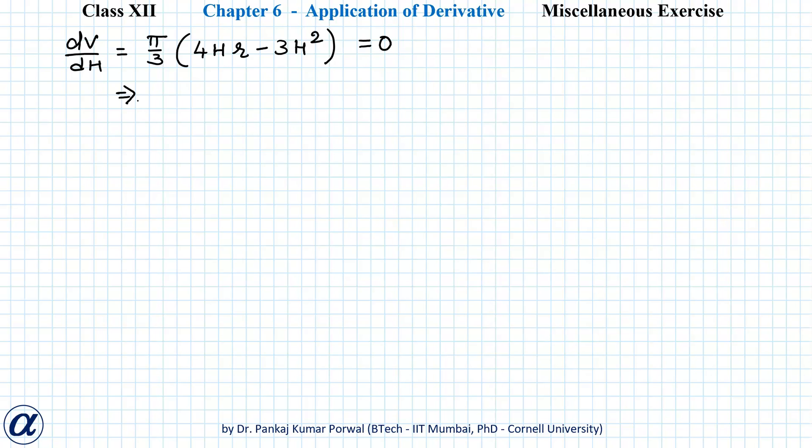So this gives me π/3, I can take H common so that gives me 4r - 3H = 0, and this gives me H = 0 or H = 4r/3.